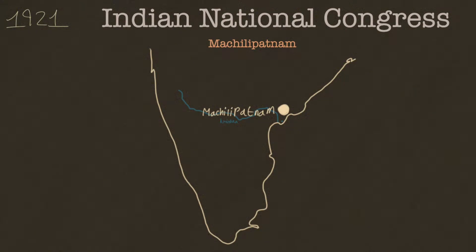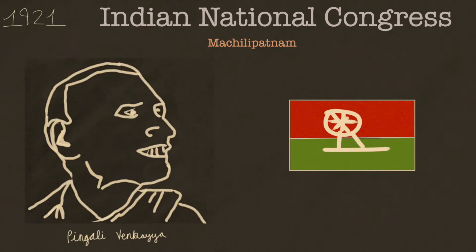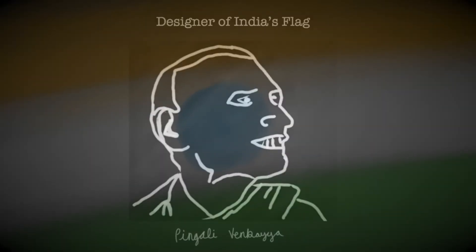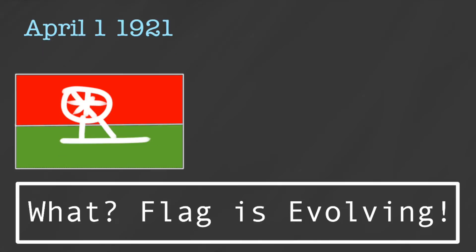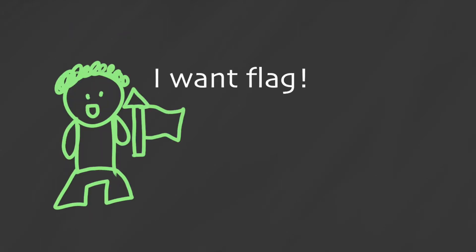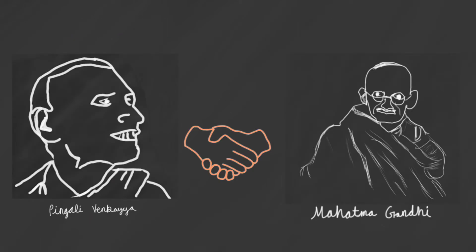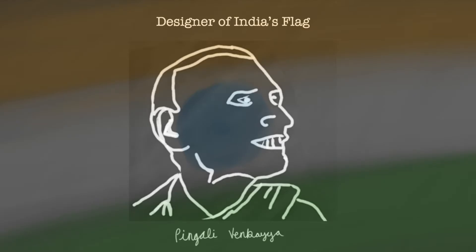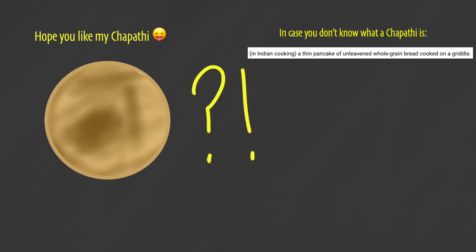We visit a session of the Indian National Congress in the city of Machilipatnam to find a Telugu man, Pingali Vankaya, working hard on making a flag for India at the request of Mahatma Gandhi. Pingali Vankaya is known as the designer of the Indian flag, and this design from 100 years ago would evolve into the recognizable flag India flies today. But how did the flag movement even start, how did Pingali Vankaya and Mahatma Gandhi meet, what happened to Gandhi's spinning wheel, and what happened to Pingali Vankaya?